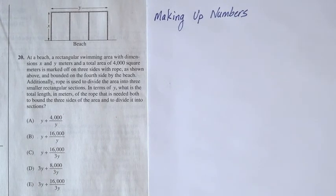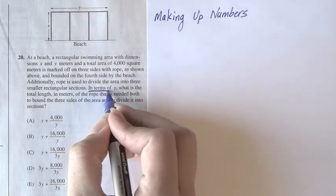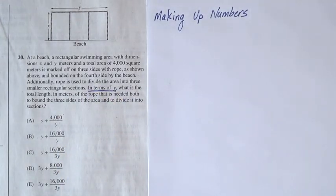So, looking at this problem, I'm seeing variables in the question, variables in the answer, and this phrase 'in terms of y'. This is a really good indication that this might be a making up numbers problem.